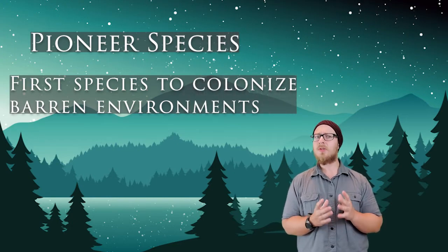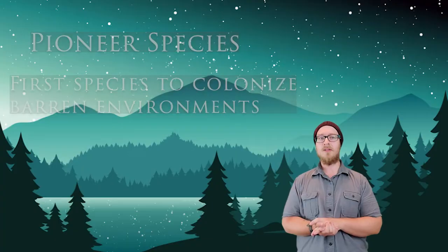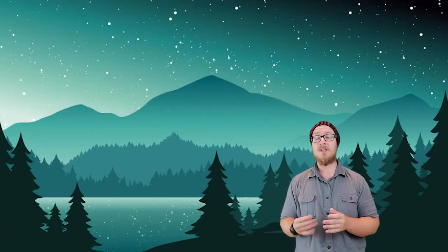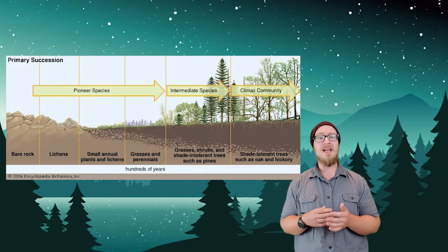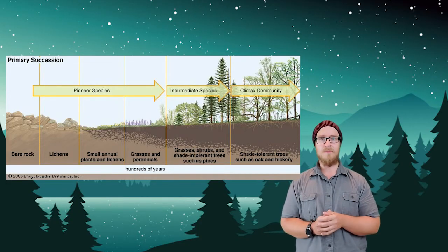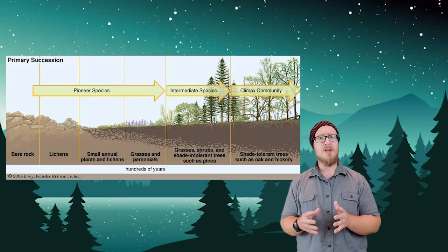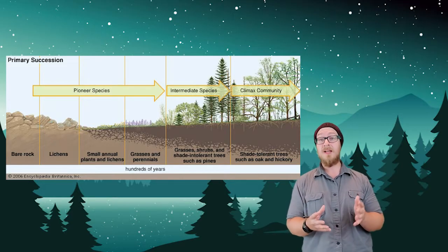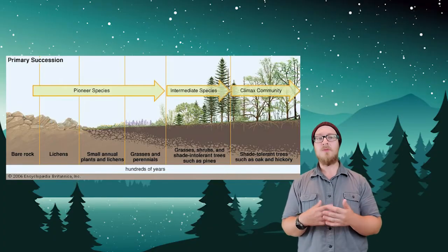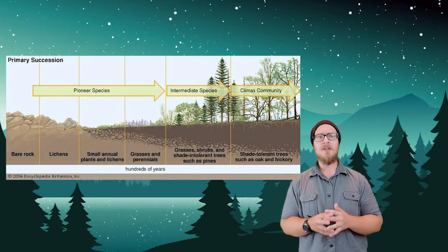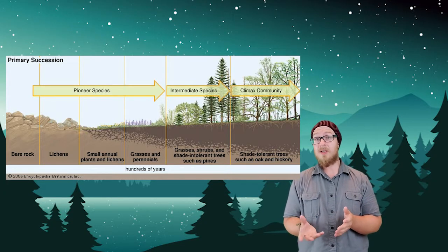Pioneer species are the first to colonize barren environments. As these organisms live, die, and decay, they continue to contribute to the nutrient content and depth of the soil. After some time, there's enough soil to support larger plants like shrubs. This process of decaying plants continues to build depth and soil quality until softwood trees like evergreens can establish.